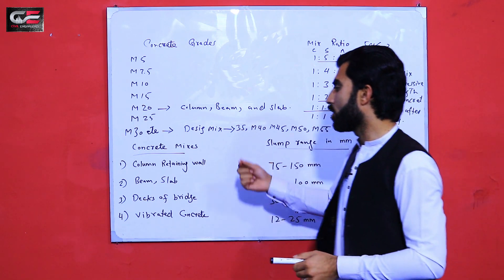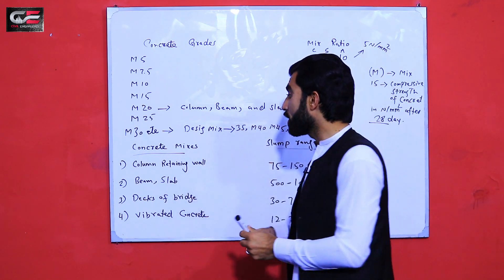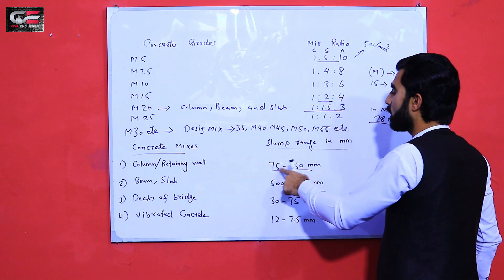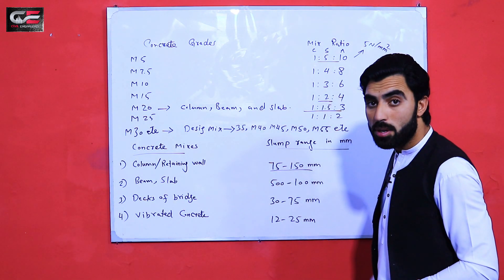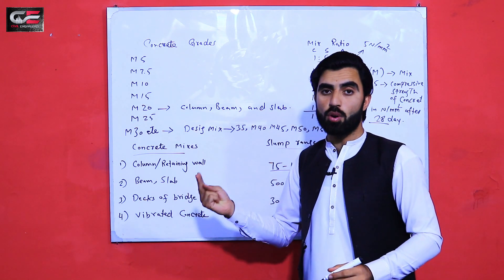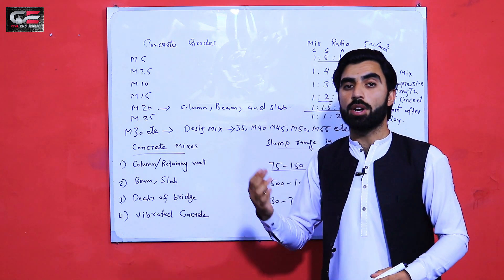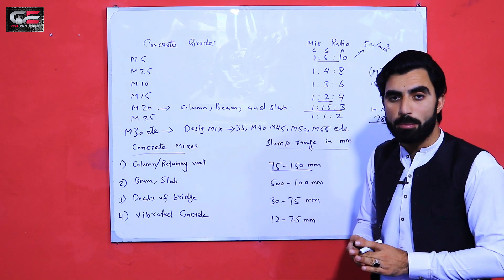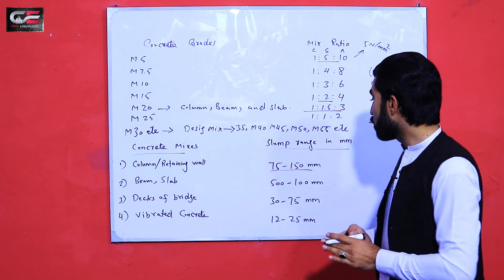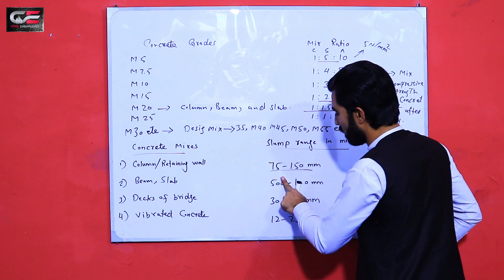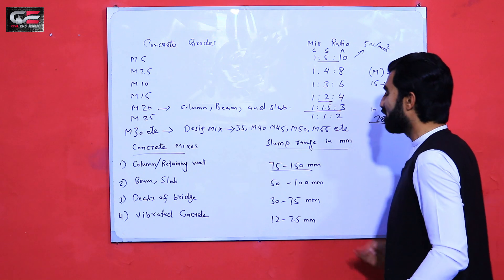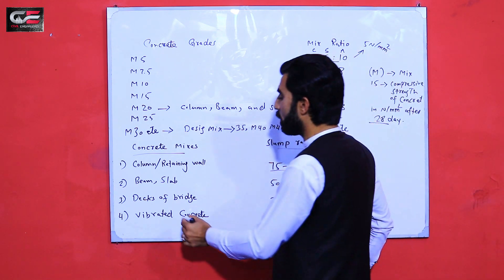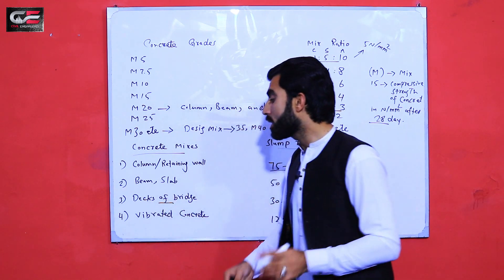Now let's look at concrete mix and slump range in millimeters. For columns and retaining walls, the slump test range is 75 to 150 mm. Before starting concrete work for beams and slabs, you check the slump test to verify workability of concrete — the slump range for beams and slabs is 50 to 100 mm.